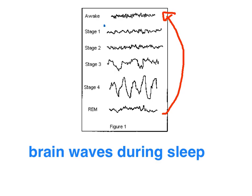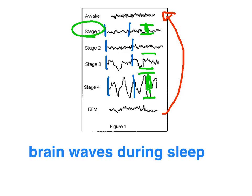During non-REM sleep, the frequency gets lower as we move into a deeper sleep, and the amplitude gets larger as we move into a deeper sleep as well. So in light non-REM sleep — stage 1 — we have higher frequency and lower amplitude, as opposed to deeper sleep — stage 4 — where we have the lowest frequency and the highest amplitude.